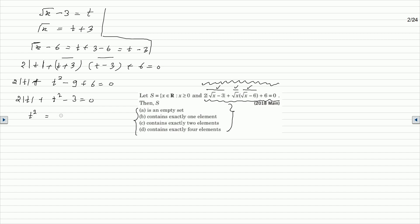Since t² is always equal to |t|², we can replace t² with |t|². The equation becomes |t|² + 2|t| - 3 = 0, which is a quadratic equation in terms of |t|.